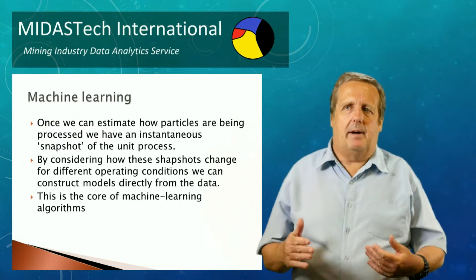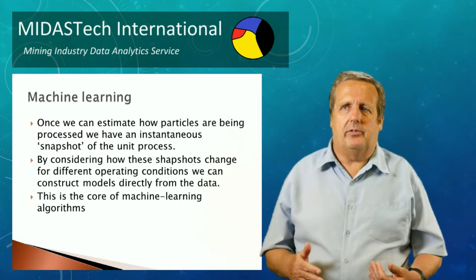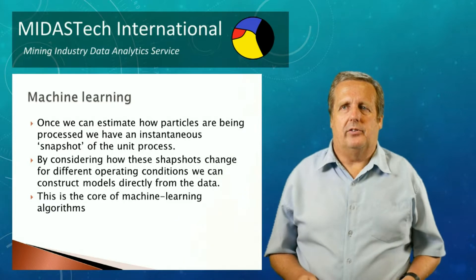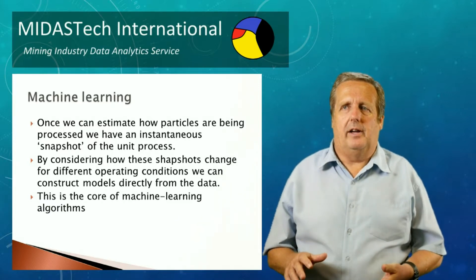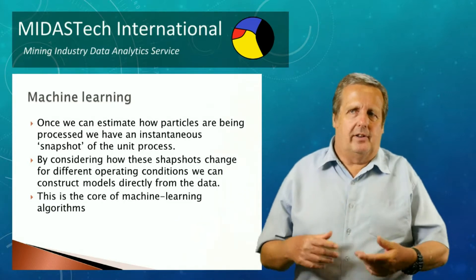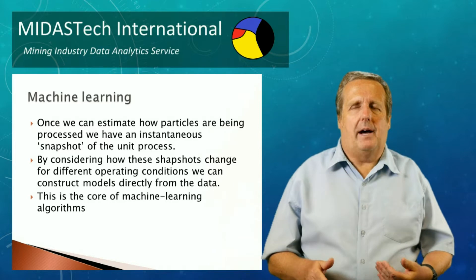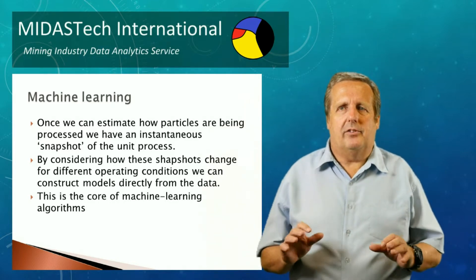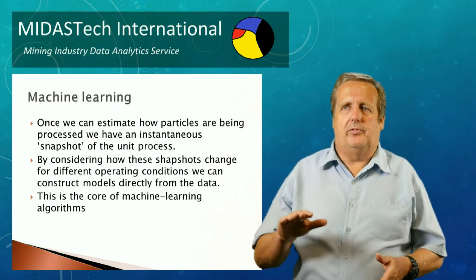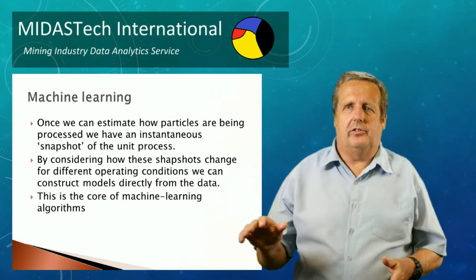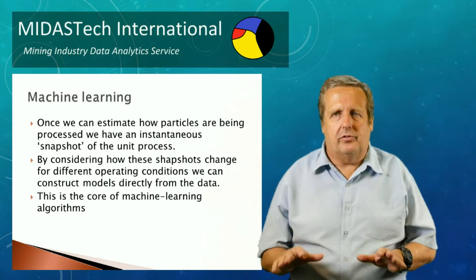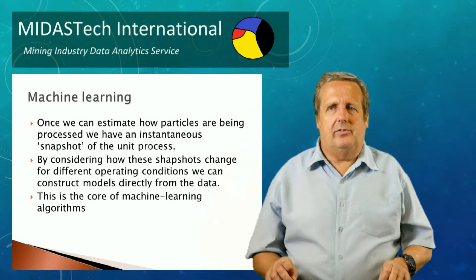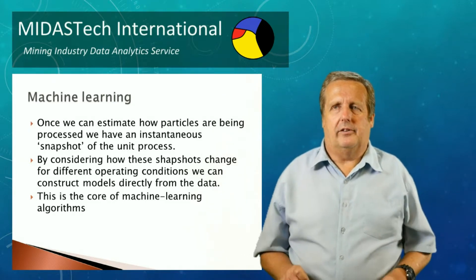Once we can estimate how particles are being processed, we have an instantaneous snapshot of the unit process. By considering how these snapshots change for different operating conditions, we can construct models directly from the data. This is the core of the machine learning algorithms.